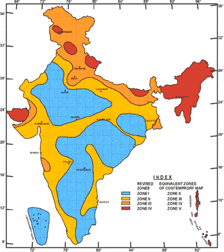In Bihar, the northern part of the state near Raxaul, near the border of India and Nepal, is also in Zone 4. Zone 3 is classified as the Moderate Damage Risk Zone, which is liable to MSK VII and also 7.8. The IS code assigns a zone factor of 0.16 for Zone 3.